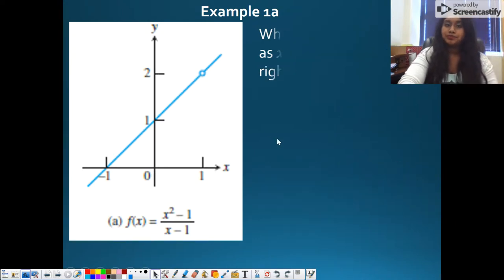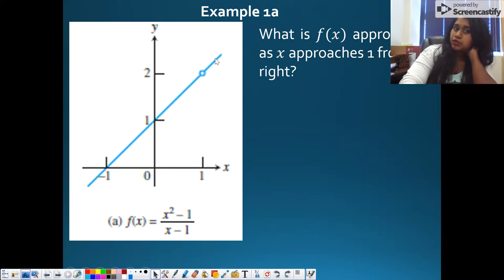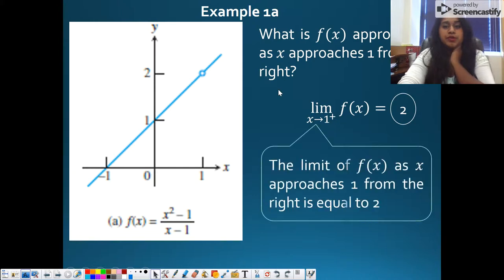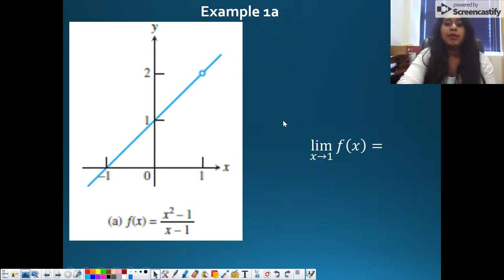But what about approaching from the right? So we follow along, go on our graph, and it is also approaching 2 from the right. So the limit of f(x) as x approaches 1 from the right is equal to 2. There's that math literacy sentence.